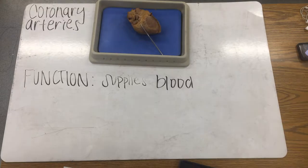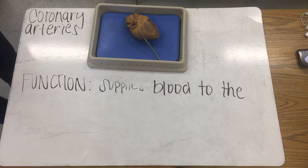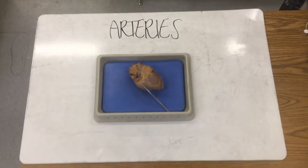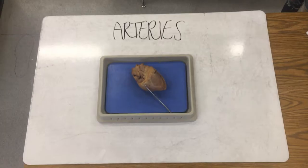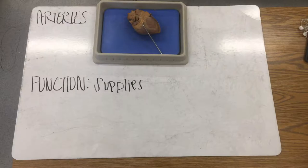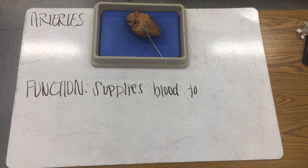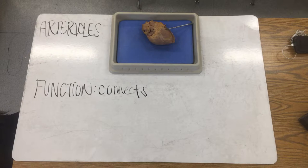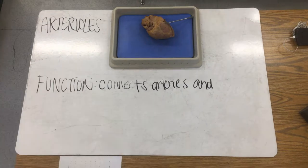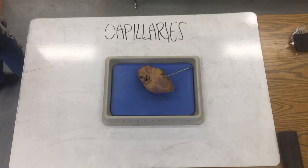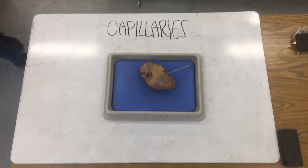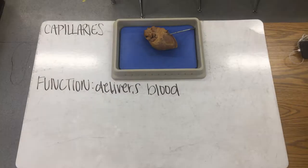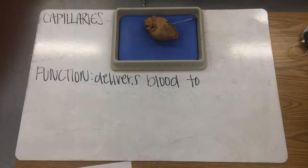Coronary arteries are the arteries that supply blood to the heart itself. Arteries are what carries the blood throughout the body. Arterioles are the slightly smaller structures that connect arteries and capillaries.